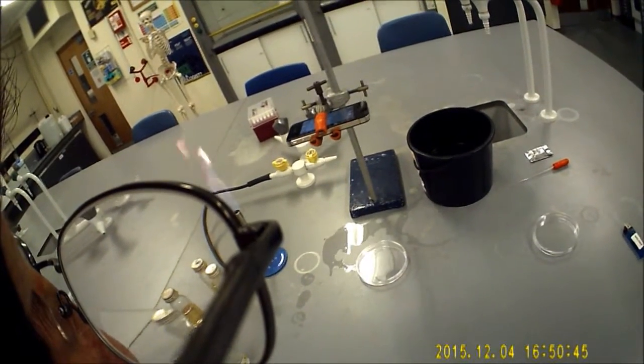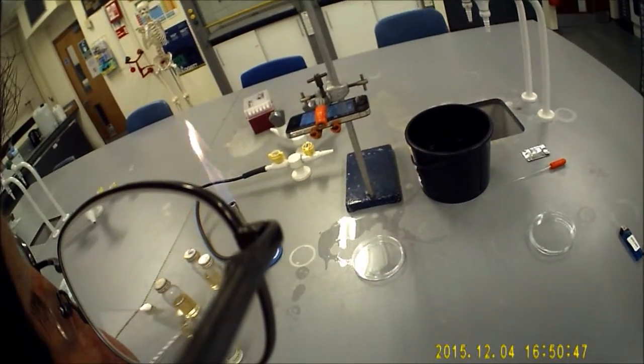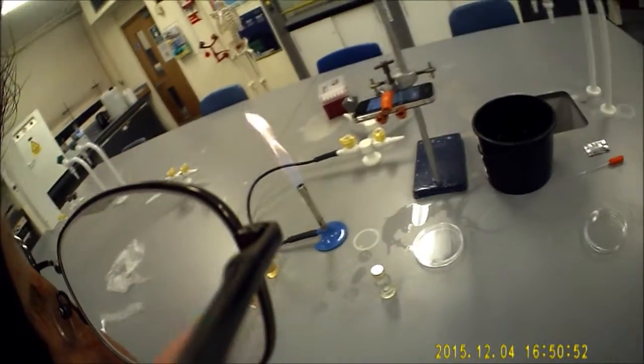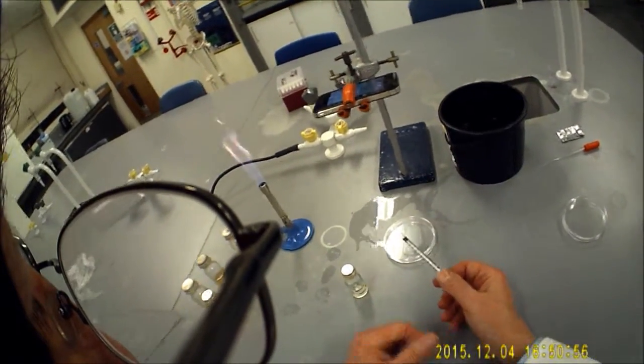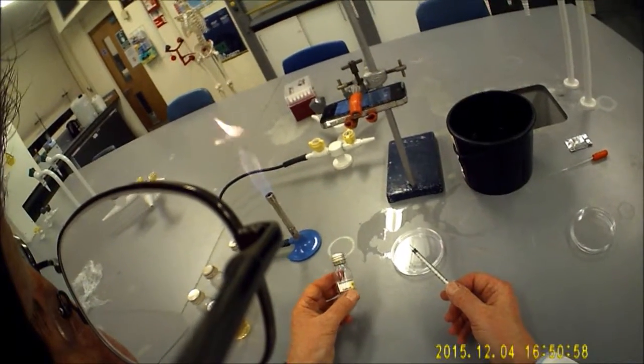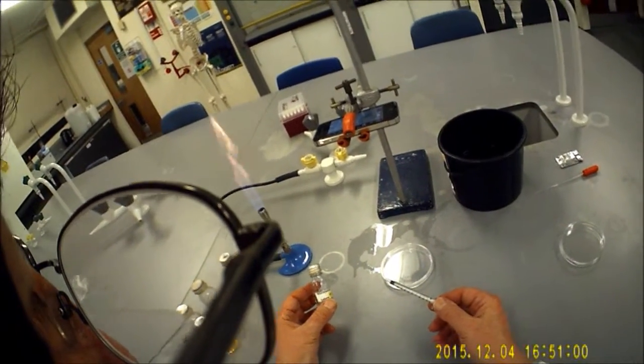I'm going to start off with method one, which is to prepare a pour plate. I'm going to use 0.5 ml of Micrococcus luteus in the pour plate.